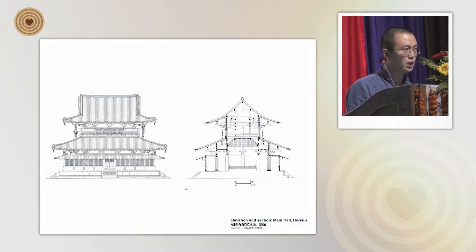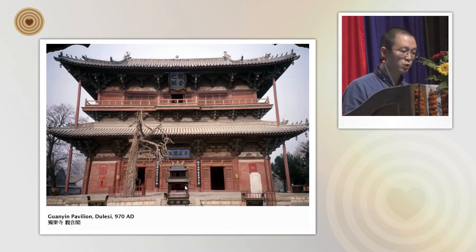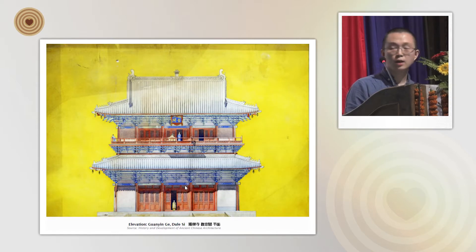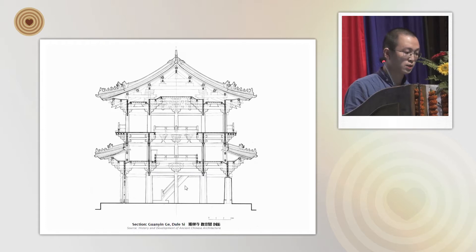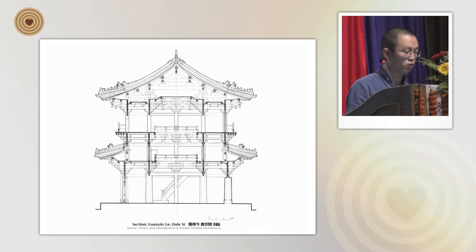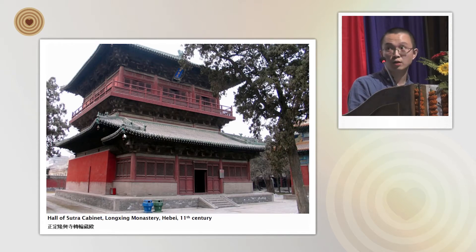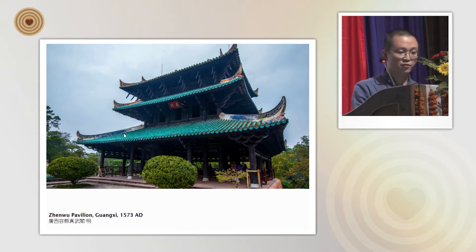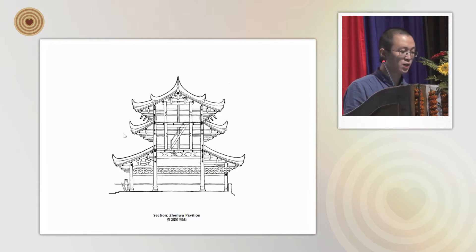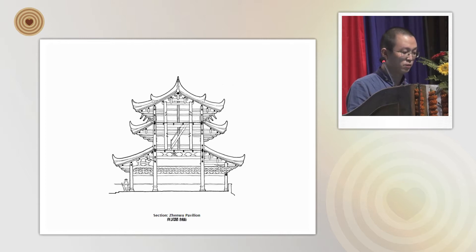The most typical example is the 9th century Guanyin Pavilion from North China — a similar square plan with a two-storied elevation. Between the two functional layers there is a transitional layer, which allows a large space to be achieved in the upper floor to accommodate large statues. We can see other examples in North China, and also in South China, where the multi-storied hall pavilions are slightly different — without the transitional layers, the roof is directly supported by single columns.